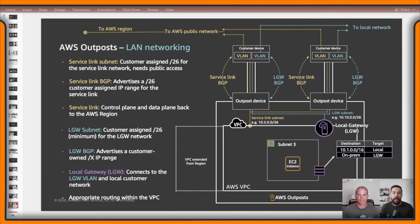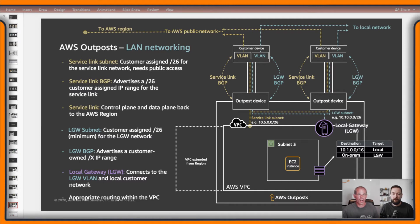The Outpost is dependent on that WAN connection — it's not like we can put an Outpost on a cruise ship and send it up to Alaska and plug it in when it gets back. We have actually had that question from customers, believe it or not. I brought up the architecture again — if you look at the yellow lines at the top here showing two AWS public network connections, that's really what we're talking about with the redundancy of two Direct Connects or two network connections out to an AWS region.